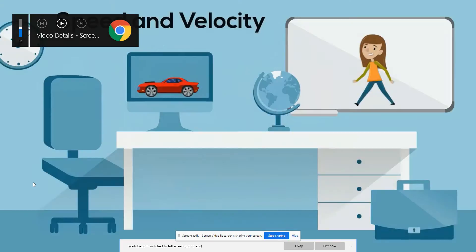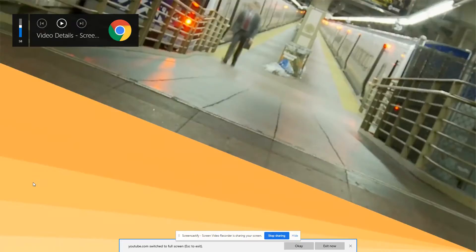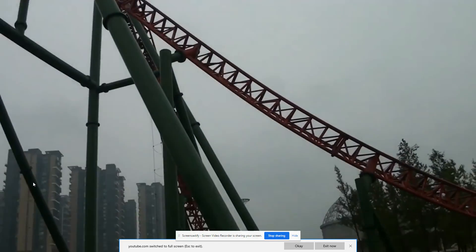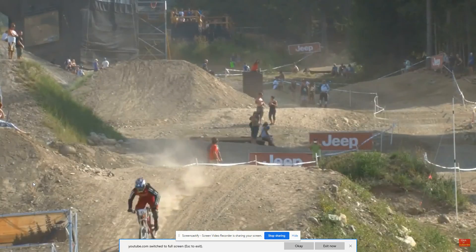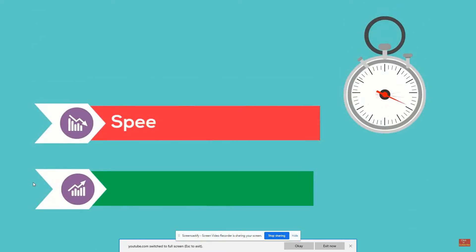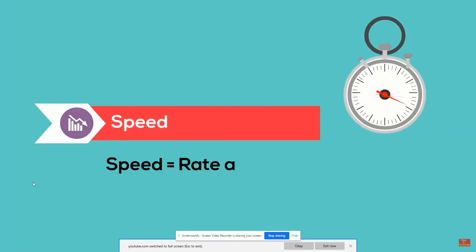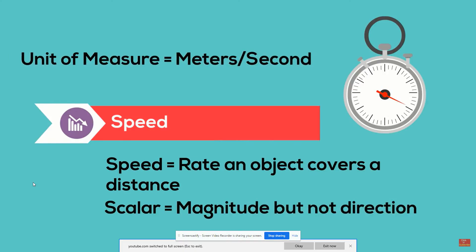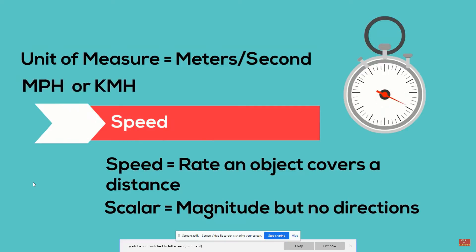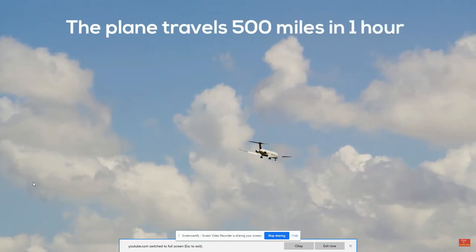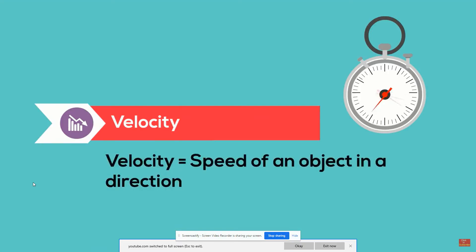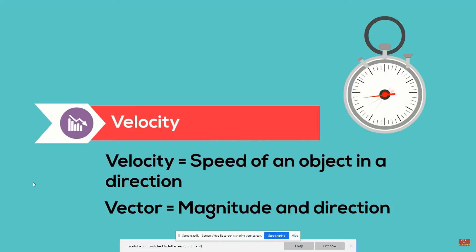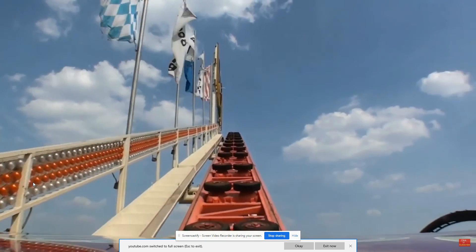Welcome to Moving Math and Science. In this video, we'll talk about speed and velocity. Motion and movement is all around us — at a crowded train station, a roller coaster, or someone hitting a jump on a bike. Speed is the rate at which an object covers a distance; it is a scalar measurement, meaning it measures magnitude but not direction, in units like meters per second or miles per hour. Velocity is the speed of an object in a certain direction — it is a vector, measuring both magnitude and direction.